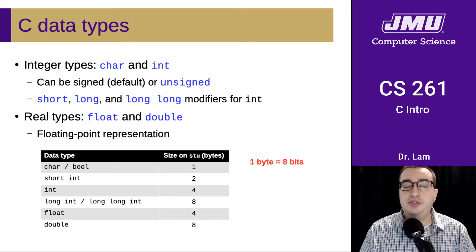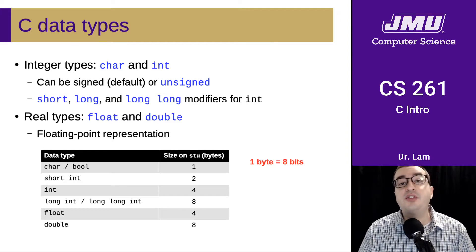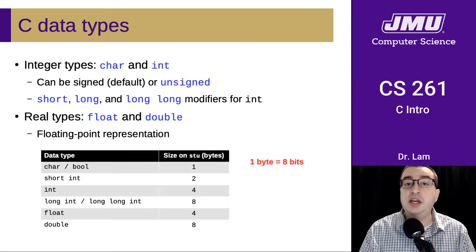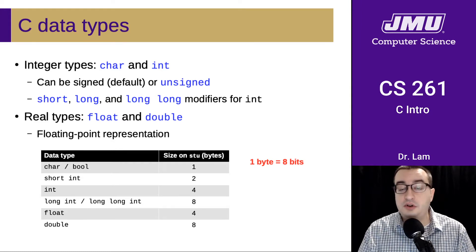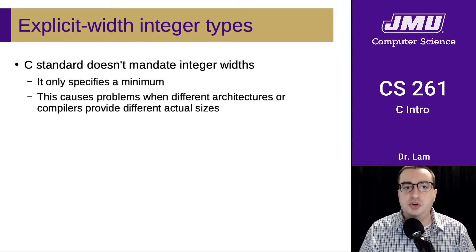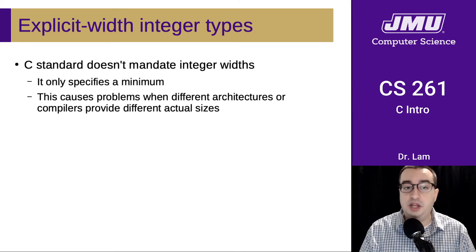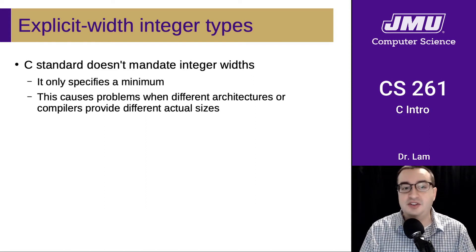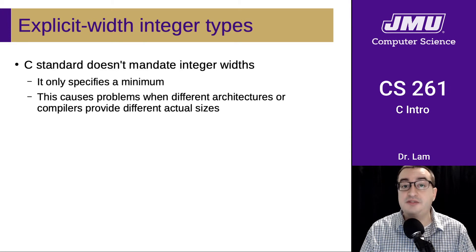Here's a summary of the different data types and their sizes on stew. If you ask for an int on our student server at JMU, you're going to get something that is four bytes long. If you ask for a double, you'll get a floating point number that is eight bytes long. But those are just the numbers on stew — the C standard itself doesn't actually mandate integer widths. It only specifies a minimum, which can cause problems across different architectures, since the hardware itself provides different actual sizes.